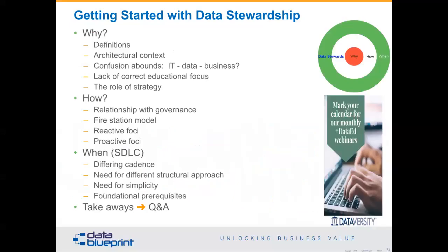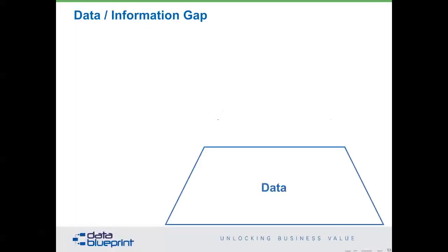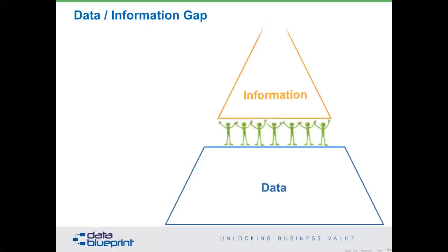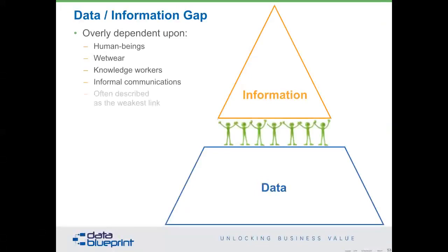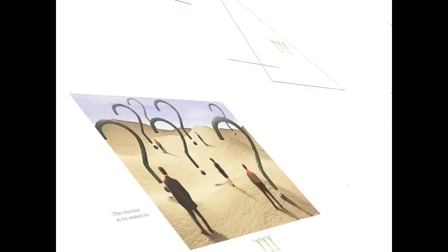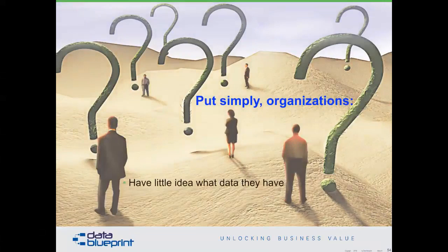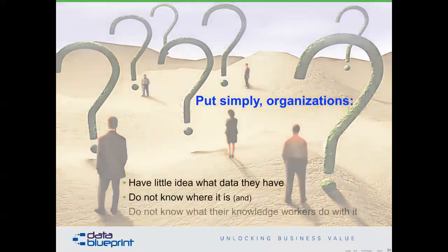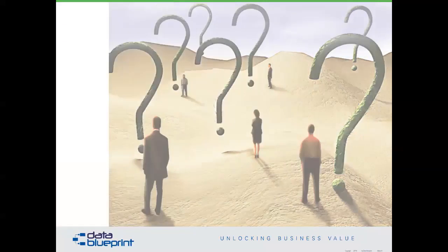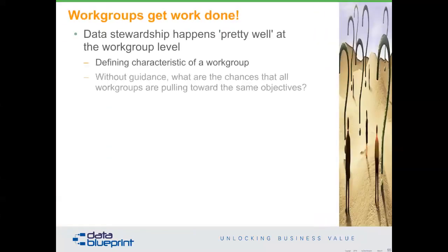That's sort of our first section on why. Let's now talk about how stewards actually work. Most of you understand that there's a version of this somewhere in your office which says, implicitly or explicitly, our process for turning data into information is overly dependent on human beings — wetware, the stuff between our ears, knowledge workers, informal communications. It's described as the weakest link in some organizations. The simple fact is that organizations don't know what data they have, they don't know where it's at, and they don't know what knowledge workers do with it. And that, while presenting additional sources of risk, also includes efficiency components.